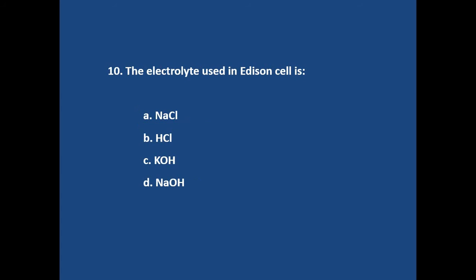Question number 10. The electrolyte used in Edison cell is? Answer is option C. KOH that is potassium hydroxide.